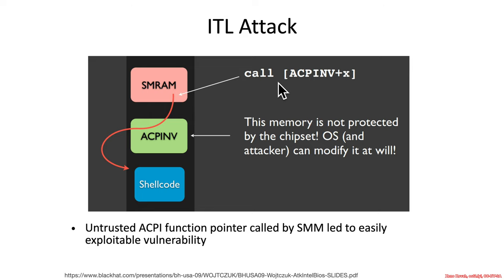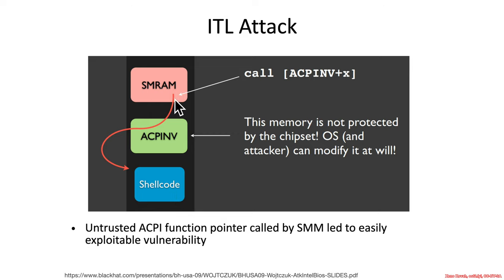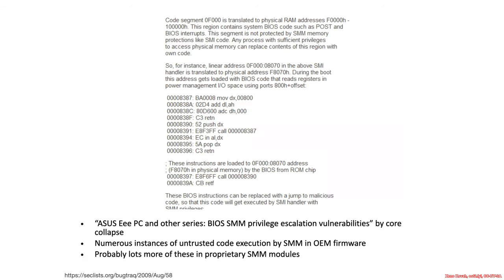But if you have something like a call assembly instruction in SMRAM that is taking a memory address outside of SMRAM, then an attacker can just rewrite that memory address and point it wherever they want - to attacker shellcode. That code will run in the context of a CPU that is in SMM, and consequently that code will be effectively the most privileged CPU execution context.